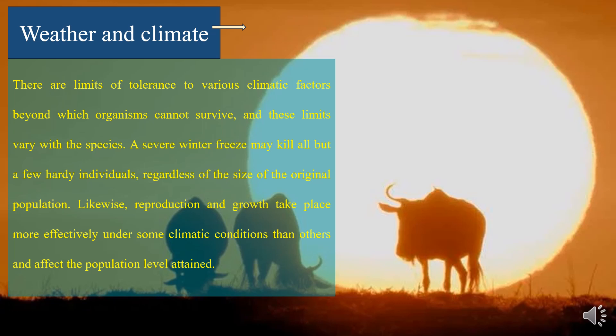Likewise, reproduction and growth take place more effectively under some climatic conditions than others and affect the population level attained. Populations subjected to intolerable weather conditions commonly fluctuate violently and erratically. Both the annual variations in climate and the more rapid changes in weather can have a regulating effect on populations.